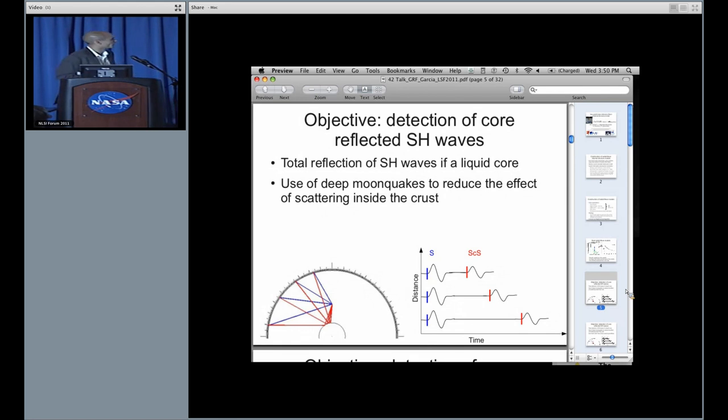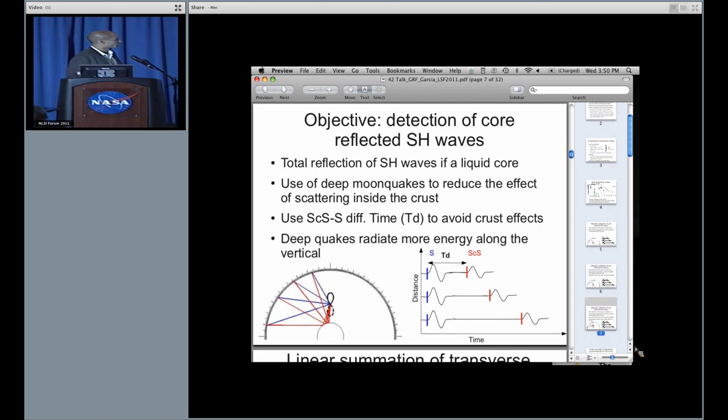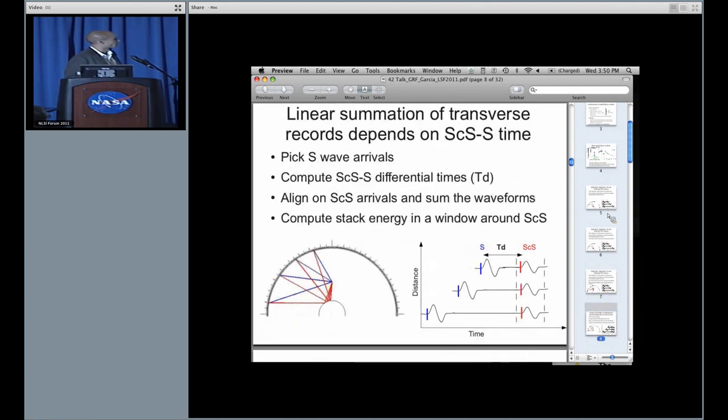The procedure is quite simple: we pick the S wave arrival, we compute in each model the differential time between the core reflected and the direct phase, and we align everything on the core reflected phase. If everything is okay, you have a constructive interference here, and if you stack the waveforms, the energy should increase around the core reflected phase. This differential time between these two waves depends of course on the core radius. If you increase the core radius, you reduce this differential time.